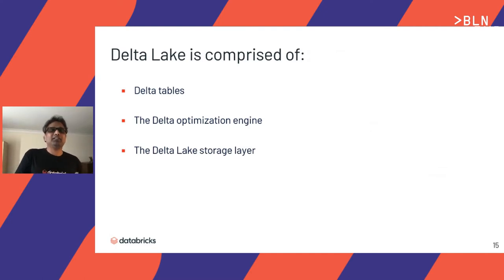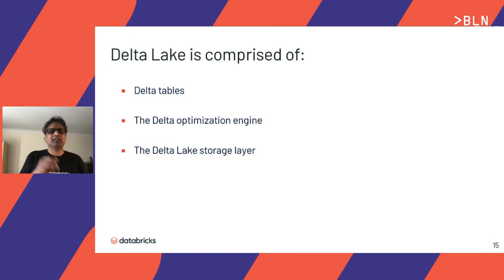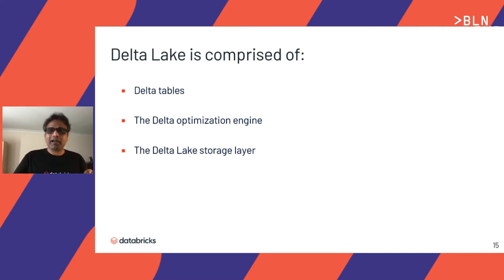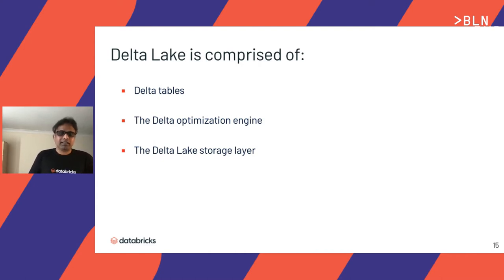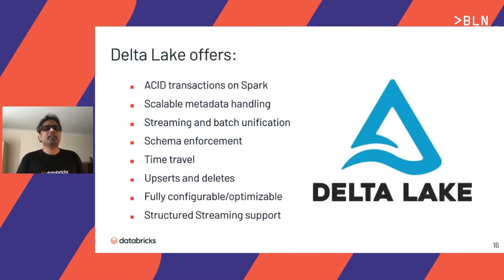Delta Lake is comprised of three important components: Delta Tables, where data is stored; the Delta Optimization Engine, which enables merges, upserts, deletes, vacuuming, and optimizing; and the Delta Lake storage layer.